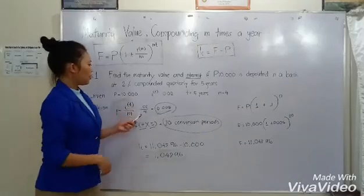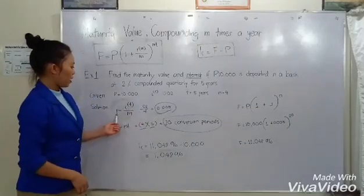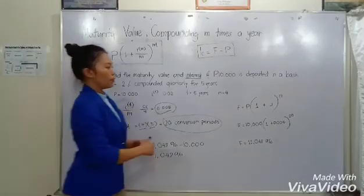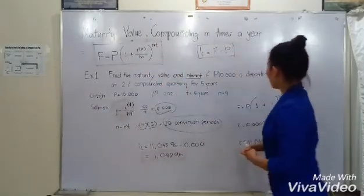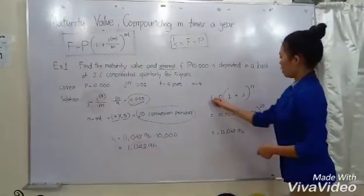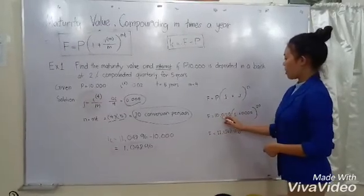After this, you already have j and n. Using the formula above, you'll just have to substitute these values. As specified, 10,000